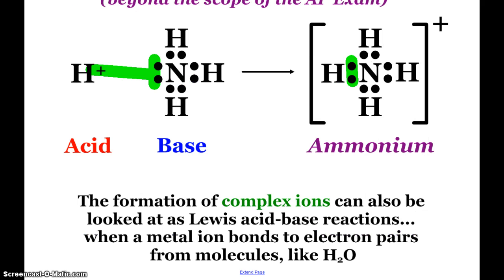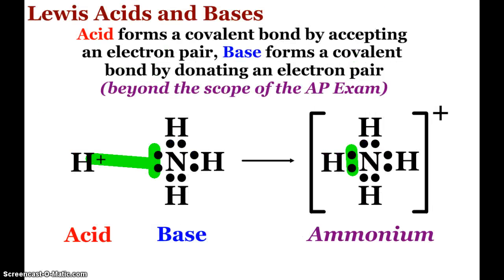Again, it's not testable, but the formation of complex ions can also be looked at as Lewis acid-base reactions. And we're going to look at these a little further down the line, so it might be important. When a metal ion bonds to electron pairs from molecules like water, that's a very common situation. We've done this in lab, when we created that complex ion, when we had the copper sulfate and kept adding concentrated ammonium hydroxide until that precipitate disappeared. We created a complex ion. So again, we'll talk about that a little further down the line. But again, the Lewis acids and bases theory and definitions are not part of our AP exam.